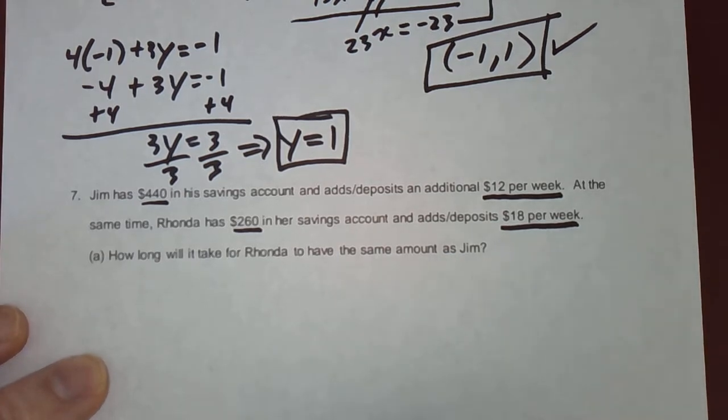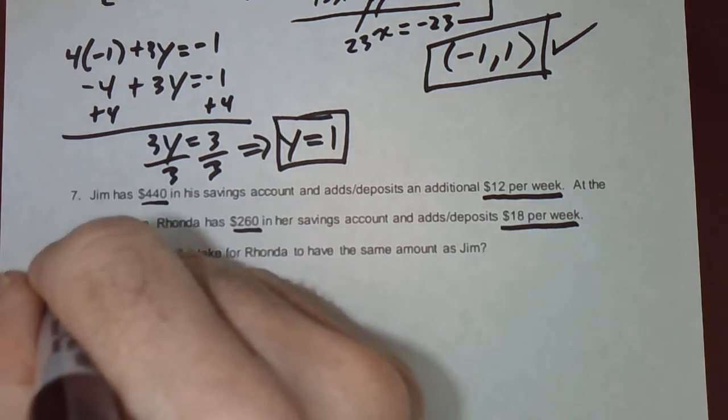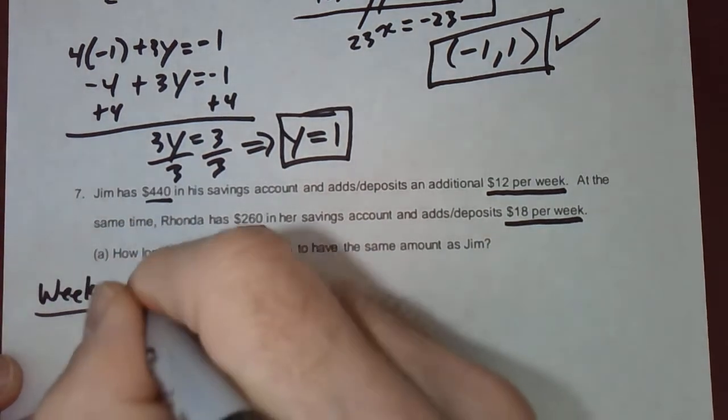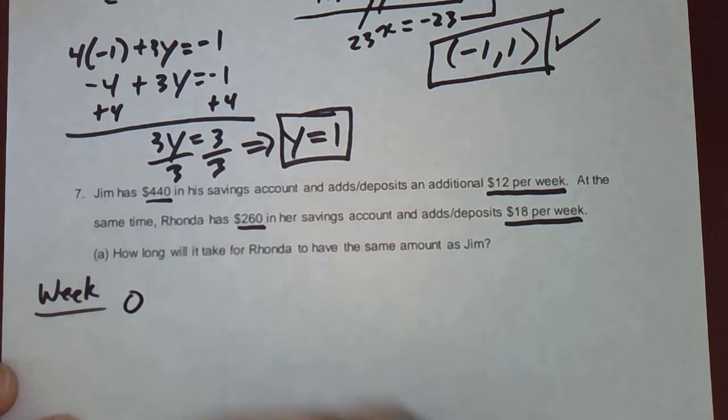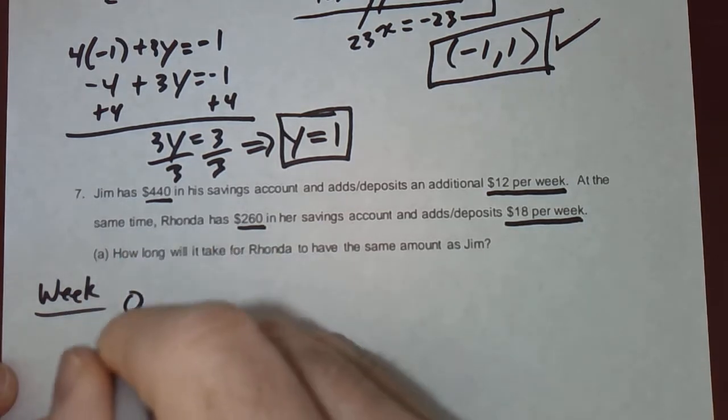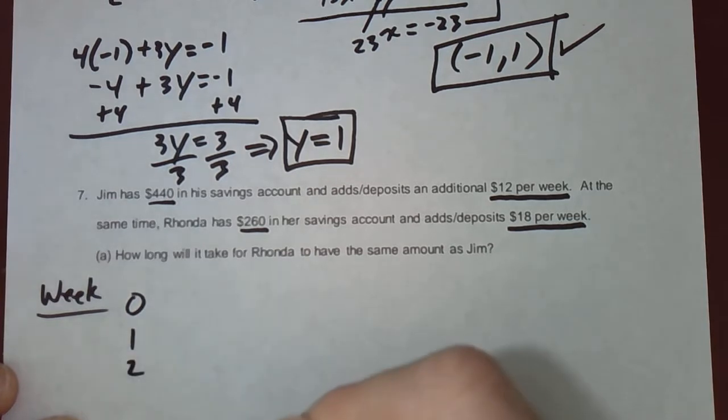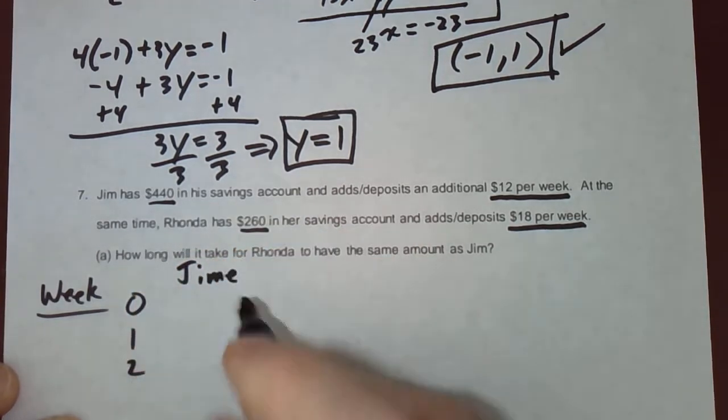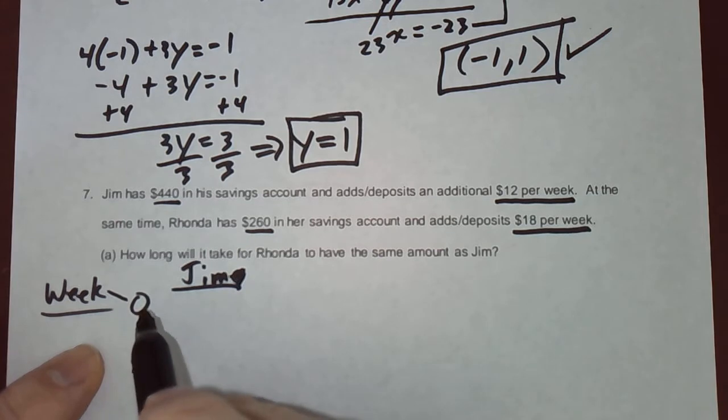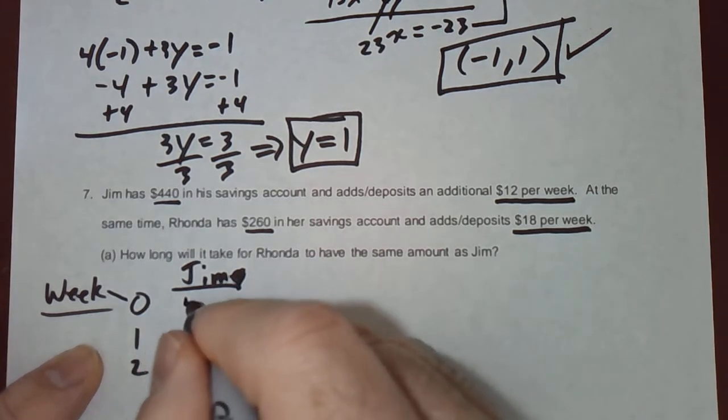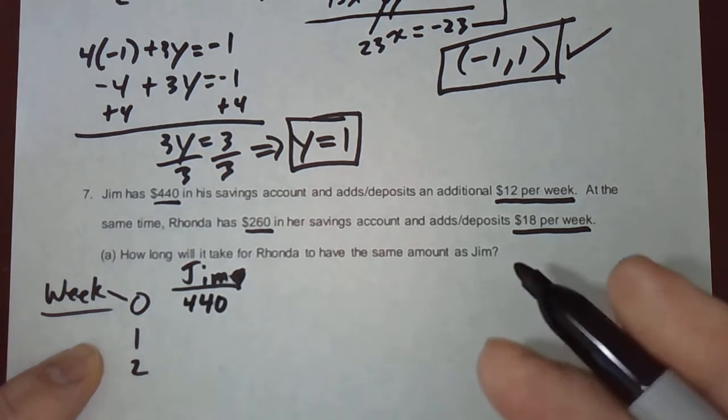So let's come up with a formula that gives us a function, that gives us how much Jim has on any given week. And we'll do the same thing for Rhonda. So first, let's take a look at Jim. I'll write way over here. For the week number, let's see. I'll write week number 0 right here. This is the week number. 1, 2. Jim has how much? Well, at week 0, that's kind of off there. At week 0, we'll say that's how much he starts with. He starts off with $440.